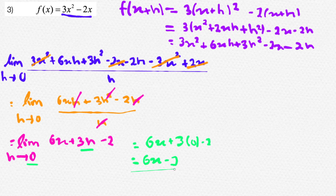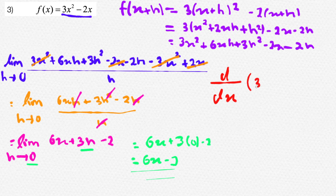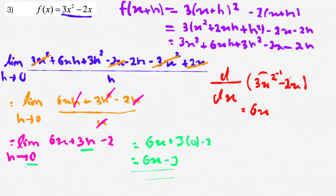To make sure of your answer, we can always derive this using our faster method. The derivative of 3x squared minus 2x: we times 2 by 3 which gives 6x, and for minus 2x, we times 1 by minus 2 which gives minus 2. Therefore our answer is correct since they match. If you learned something today, be sure to smash that like button and hit subscribe.